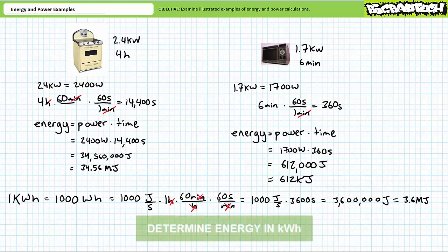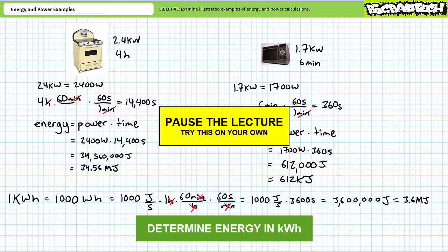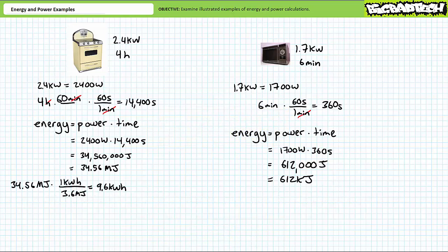Let's put our understanding of unit conversion to the test by converting the previous answers expressed in units of joules to units of kilowatt hours. Pause the lecture and try this on your own. If you're tracking, you should have obtained the following results. Let's first examine the conventional oven. Via unit conversion, 34.56 megajoules is equivalent to 9.6 kilowatt hours.